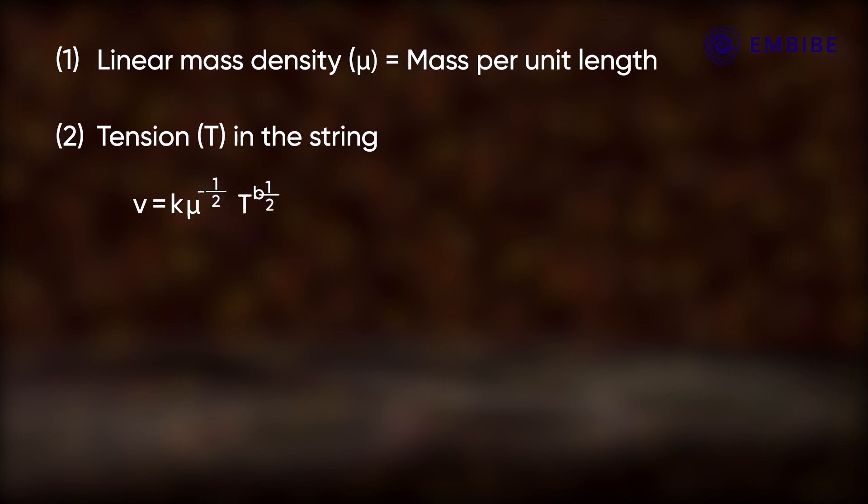Substituting the values of a and b in the above equation: v is equal to k times μ to the power minus 1 by 2, T to the power 1 by 2. Here k is equal to 1. Therefore v is equal to square root of T by μ.